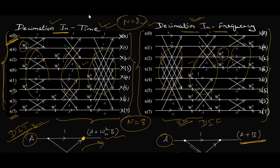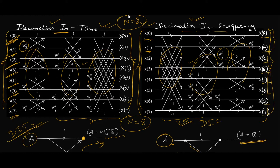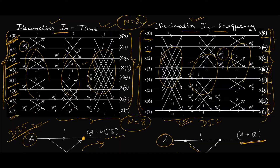The third evident difference is that for DIT, the inputs are decimated — we reverse the order of the bits so that the output will be in proper order. But for DIF, the order of input samples is in natural order, while the output samples are decimated. You can see the output order is: 0, 4, 2, 6, 1, 5, 3, 7 — exactly the same order as the input side of DIT.